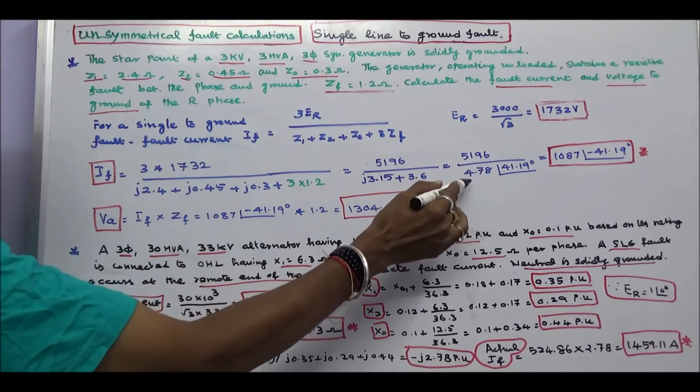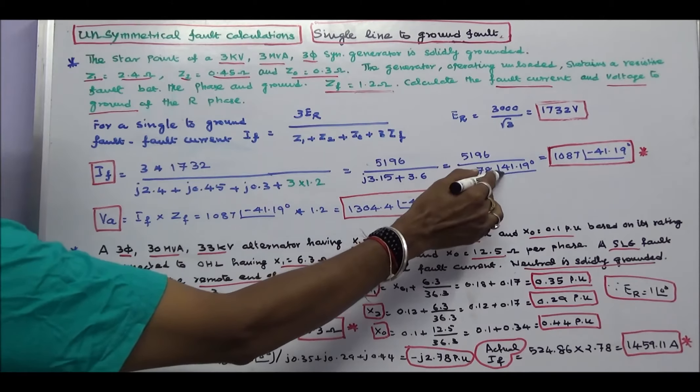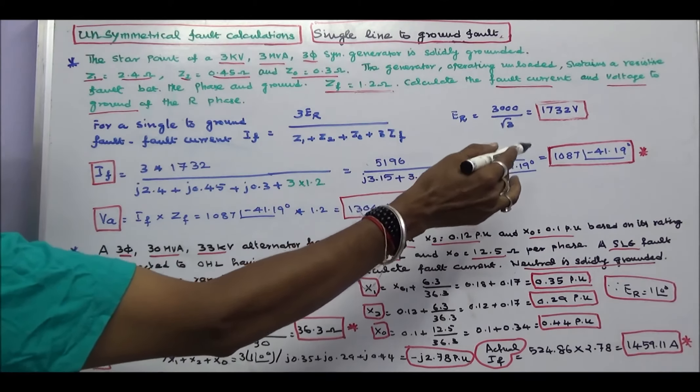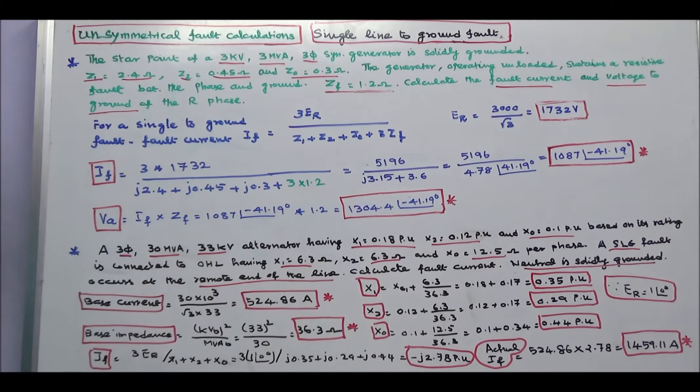Therefore 5196 divided by 4.78 angle 41.19 degrees. That is equal to 1087 angle minus 41.19 degrees. That is the fault current.